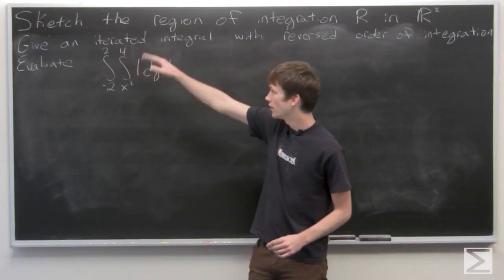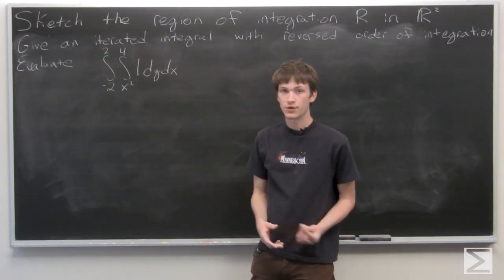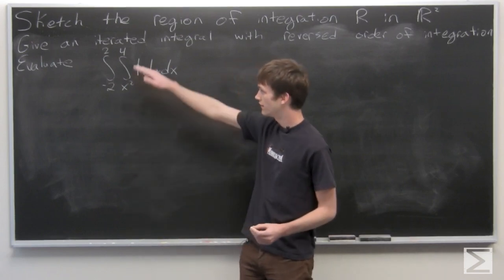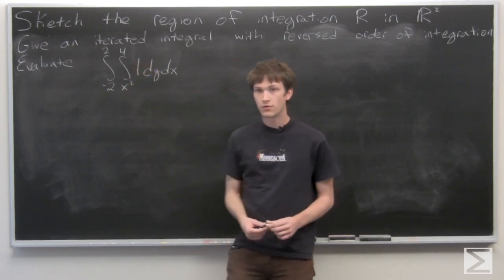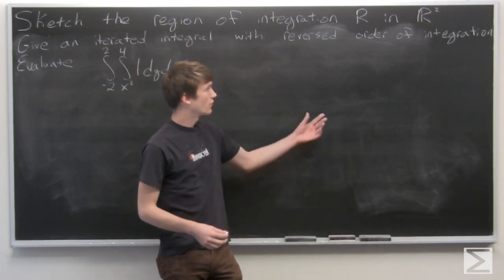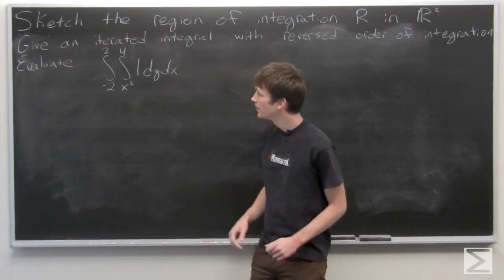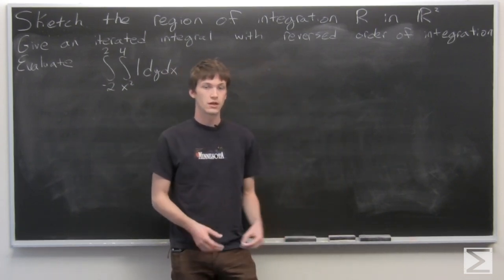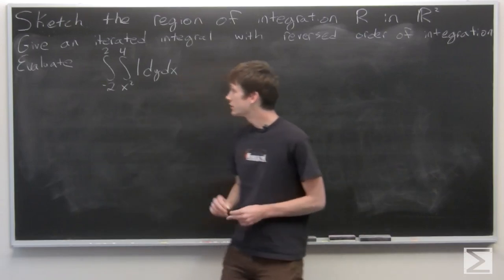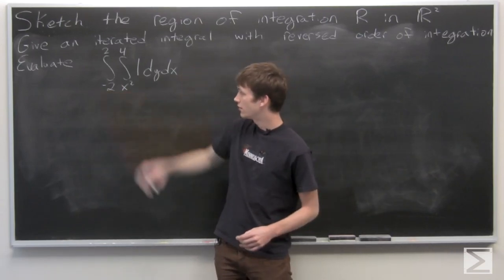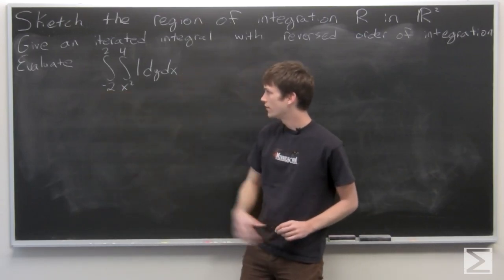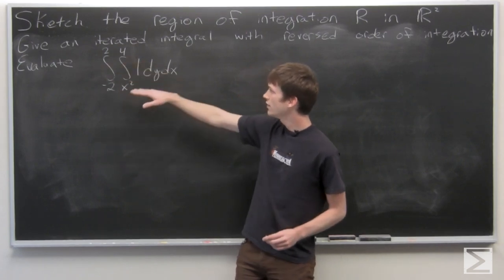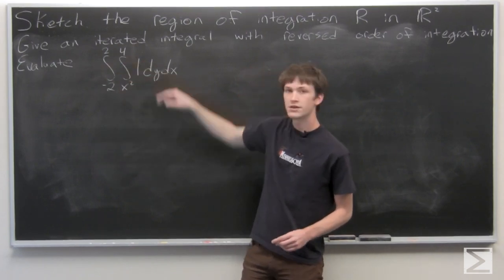In this problem, we're asked to sketch the region of integration R in R2, and then give an iterated integral in which the order of integration is reversed, and then evaluate that newly created iterated integral. So we're given the iterated integral from negative 2 to 2 and from x squared to 4 of 1 dy dx.